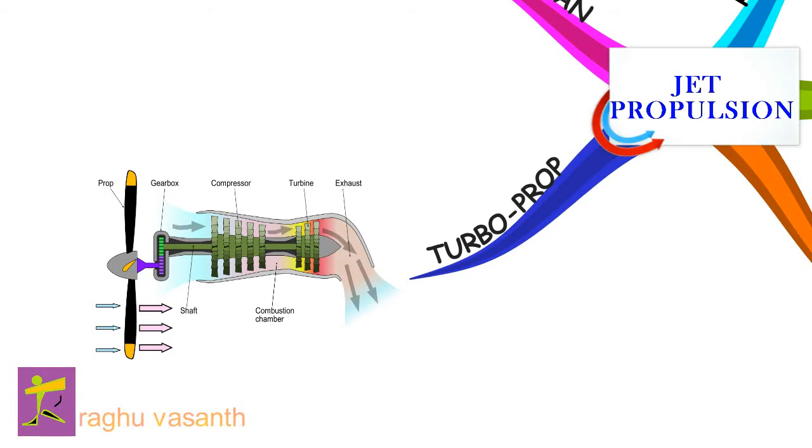In its simplest form a turboprop consists of an intake, compressor, combustor, turbine, and a propelling nozzle. Air is drawn into the intake and compressed by the compressor. Fuel is then added to the compressed air in the combustor, where the fuel-air mixture then combusts. The hot combustion gases expand through the turbine. Some of the power generated by the turbine is used to drive the compressor. The rest is transmitted through the reduction gearing to the propeller.